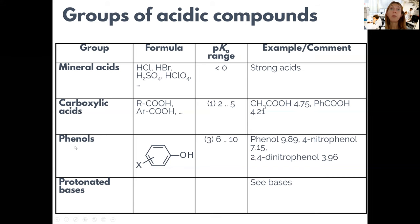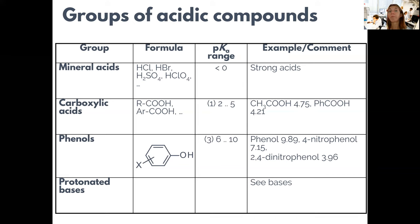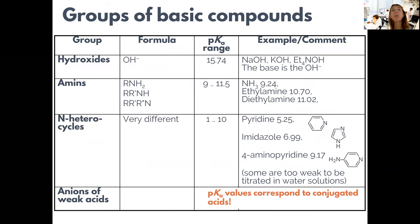Phenols are also acids but their pKa values are usually much higher — typically between 6 and 10 — so they are much weaker acids. Titration of phenols in water solution is complicated, but they can be determined by titration in other media such as organic solvents. Protonated bases can also be titrated, and basic compounds can also be determined with titration reactions.